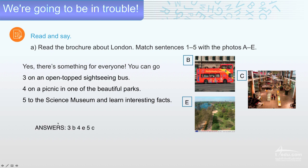Let's see the answer. 3, B. On the open top sightseeing bus. This one. Number 4, this is E. On a picnic in one of the beautiful parks. So it's E here. Number 5, to the Science Museum and learn interesting facts. Of course, C. This is Science Museum.